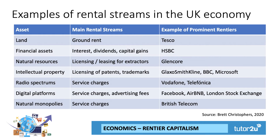We've mentioned the rental stream that comes from land — that is typically the one thing that people associate with rent. Tesco, for example, owns many thousands of acres of land. Sir James Dyson, founder of Dyson vacuum cleaners and other things, owns 33,000 acres. Several Oxford colleges own 14,000 acres of land. The ownership of land, of course, allows you to derive a ground rent from tenants.